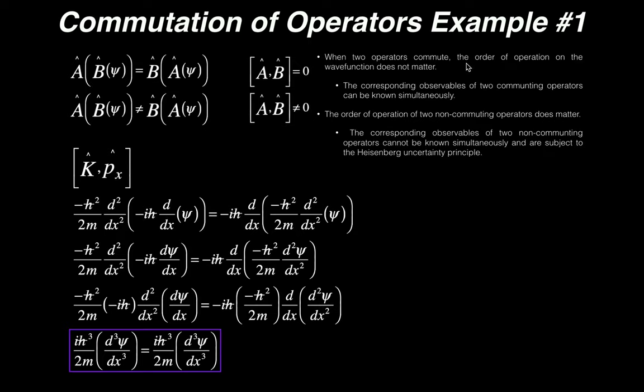So what does it mean for two operators to commute? When two operators commute, the order of operation on the wave function does not matter. And remember, if the order of operation on a wave function doesn't matter, that means those two corresponding observables for those operators can be known simultaneously.